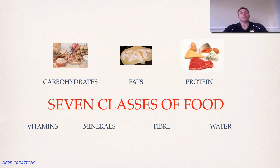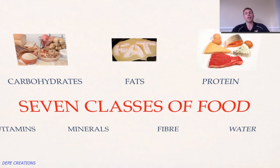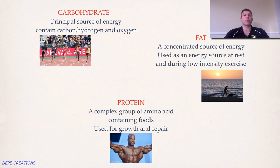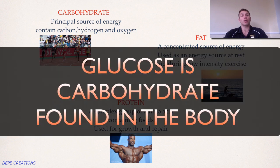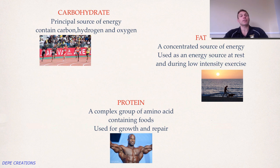There are seven classes of food — you'll know these from GCSE so I won't dwell too long. The reason the top three have photos next to them is because carbohydrates, fats, and protein form the basis of discussion for nutrition and how energy is provided, and those are the three I want to concentrate on today. Carbohydrate is our principal source of energy, containing carbon, hydrogen, and oxygen. The key concepts are that glucose is the carbohydrate being used in the body, while glycogen is that glucose stored mainly in the liver and working muscles.